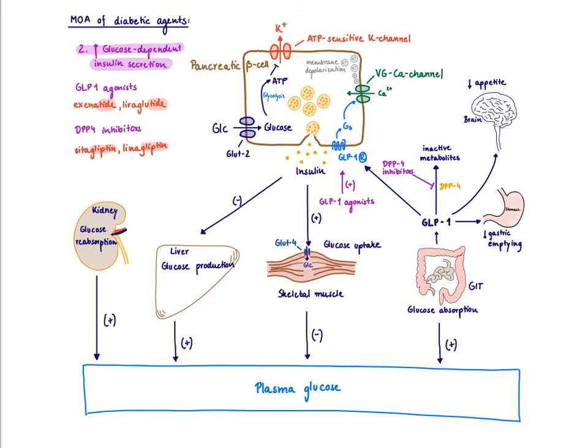GLP-1 does more than just acting at the GLP-1 receptor on the pancreatic beta cell, and so do the GLP-1 agonists. GLP-1, which stands for glucose-like peptide 1, is one of many gastrointestinal peptides. GLP-1 is made in the terminal ileum in response to nutrients.